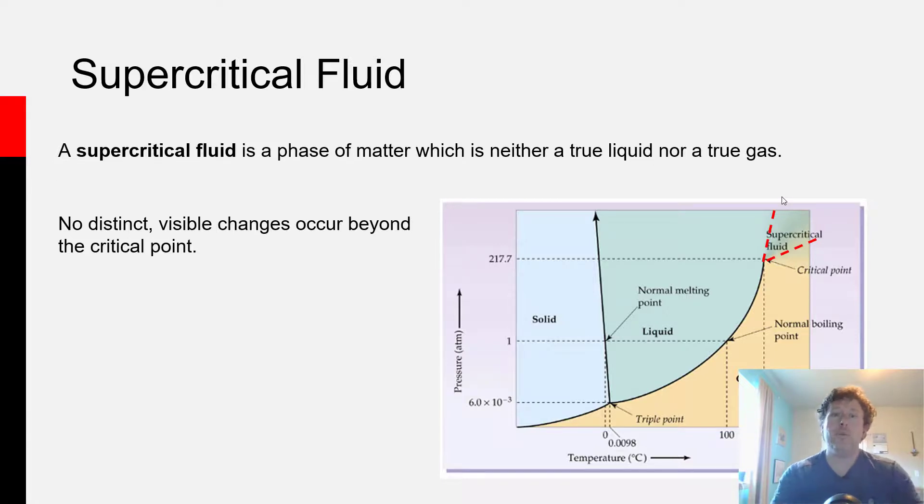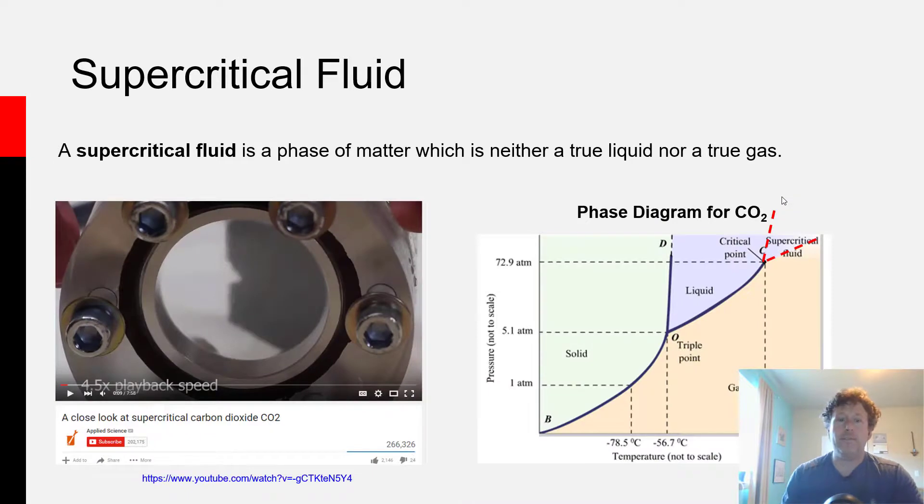And so we'll talk a little bit more about the industrial and real-world significance of supercritical fluids in Chapter 11. But I have linked in particular a YouTube video of how you can make supercritical carbon dioxide in a specially made high-pressure device so that you can see an example of a supercritical fluid. And we'll talk more about what we can use supercritical fluids for in Chapter 11.